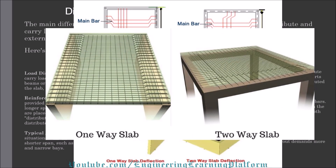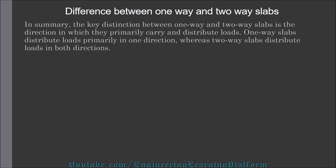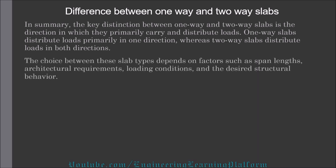The reinforcement arrangement in three-dimensional view is also shown for both one-way and two-way slabs. In summary, the key distinguishing feature between one-way and two-way slabs is the direction in which they primarily carry and distribute the loads. The choice between these slab types depends on factors such as span length, architectural requirements, loading conditions, and the desired structural behaviour for the required structural system.